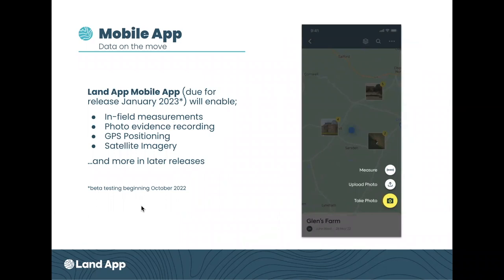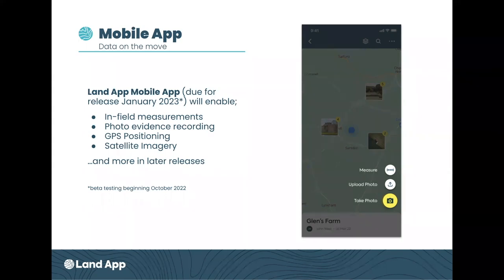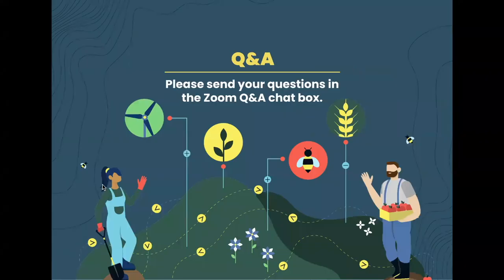Last point before Q&A: our mobile app is due for release in January 2023. I've had a play — I've got it on my phone and it's very exciting. At the moment you can do in-field measurements, upload photos, GPS positioning, and view satellite imagery. As we develop more, there'll obviously be new releases to come. Beta testing has begun, or you will hear about it in the near future. Anyone who wants to be part of the beta testing will get 50% off for the first three months of the mobile app, and they get to play with it before anyone else. So do drop us a message if you're interested in testing the mobile app. Tom, over to you to come and host the Q&A, and anyone else who's got any questions, please do. Thanks for listening.